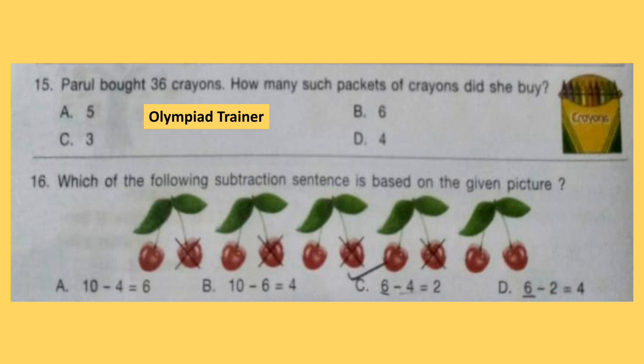Question 16. Which of the following subtraction sentences is based on the given picture? First count the total number of cherries — that is 10. Then count the number of cherries which have been crossed — it is 4. The sentence that suits the figure is 10 minus 4 equals 6. Option A is the correct answer.